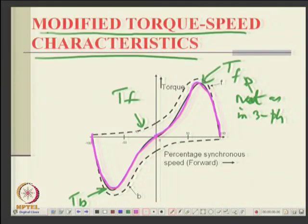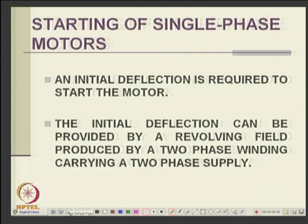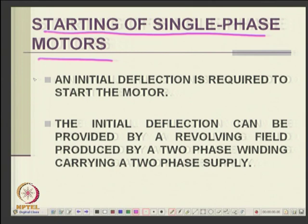Therefore, the actual forward torque is more than the backward torque — more so than what was assumed earlier. The modified torque-speed characteristics have a better net torque, but starting torque remains zero. At synchronous speed, there is actually a slight negative torque, so zero net torque occurs at slightly less than synchronous speed. This is one thing to understand. In the next class, we will look at the mechanisms of starting of single phase motors. Thank you.